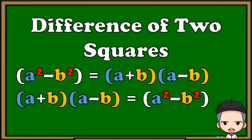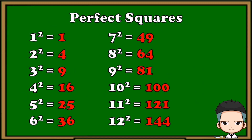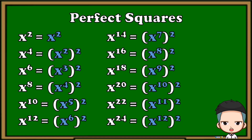Here are some examples of perfect squares. As you can see, if we square any number, the result is a perfect square. For variables, if the exponent is an even number, it is a perfect square. Make sure to familiarize yourself with perfect squares.